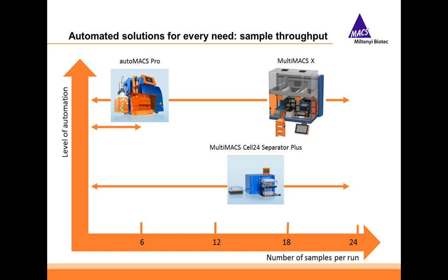This can be done manually, but Miltenyi Biotec also offers automated solutions for every need. Looking at sample throughput, with level of automation on the y-axis and number of samples per run on the x-axis: first, the AutoMACS Pro is a fully automated magnetic cell separator designed for one to six samples per run. Going from one to 24 samples, we have the MultiMACS Cell 24 Separator Plus; however, it's only semi-automated, requiring quite a bit of manual pipetting. And to have a fully automated high-throughput version, we recently introduced the MultiMACS X, which integrates the MultiMACS Cell 24 Separator into a liquid handler — fully automated, processing one to 24 samples per run.